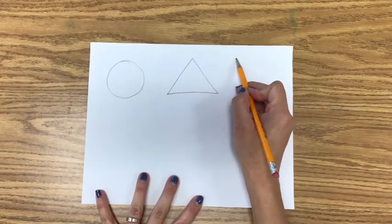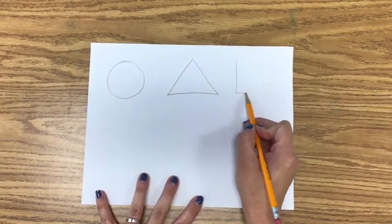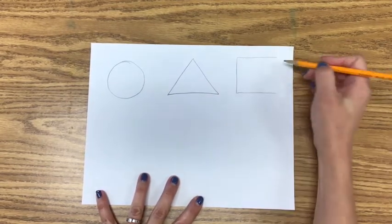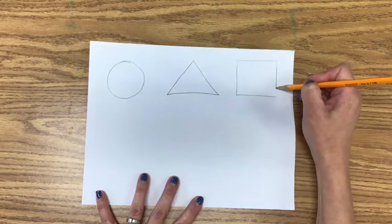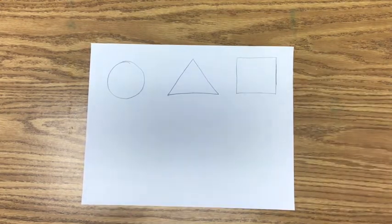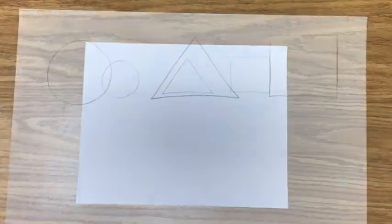Now let's try a square. Notice how I start with the letter L. The top goes straight across, and then I connect the two sides. We want all four sides to be the same length. Can you draw a square now?